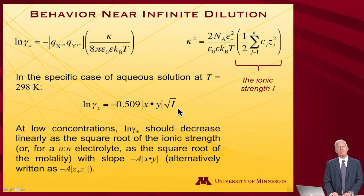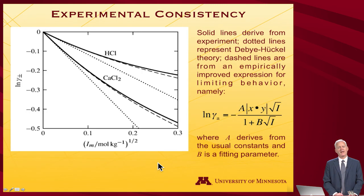And so what that says, why is that important? It says that at low enough concentrations, because that's where Debye-Hückel theory works, the log of the mean ionic activity coefficient should decrease linearly as the square root of the ionic strength, right? Because it goes as kappa, and kappa squared goes as the ionic strength, so it goes as the square root of the ionic strength with a slope of minus something x times y.